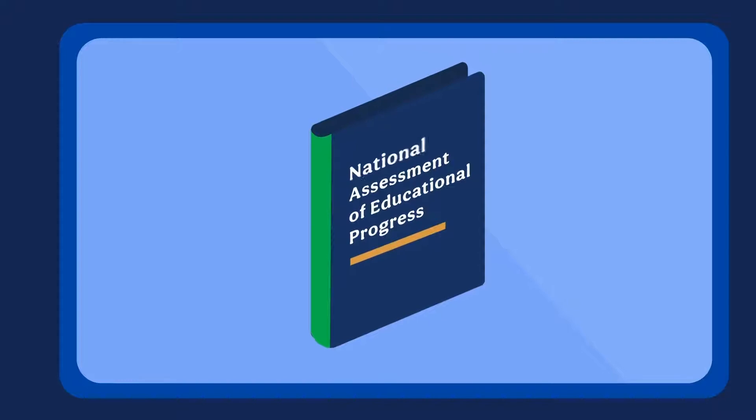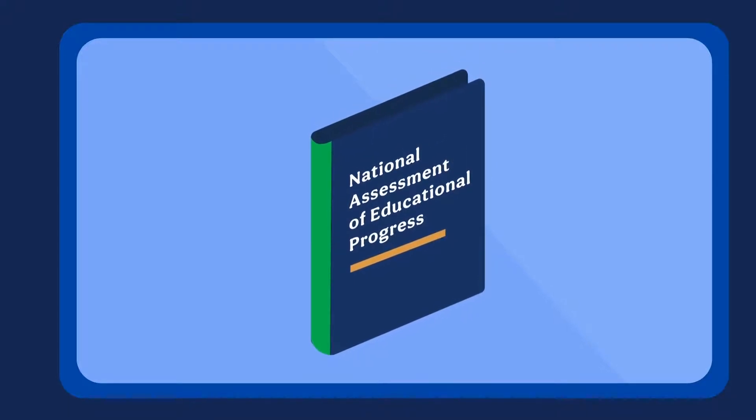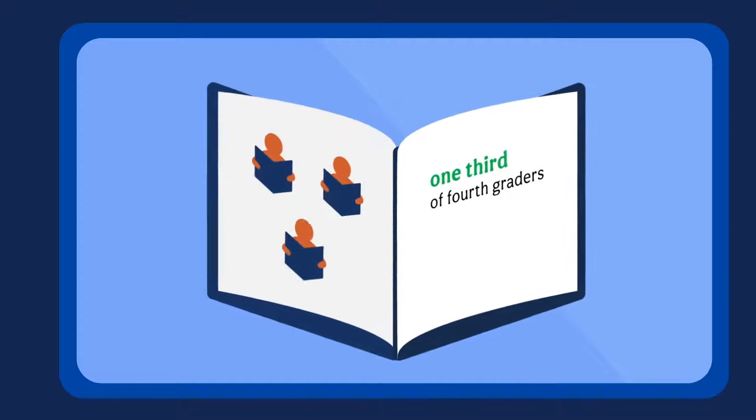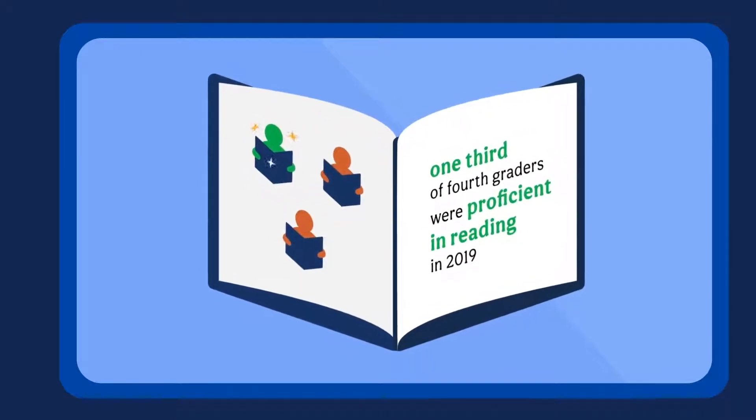Recent results from the National Assessment of Educational Progress show that only about one-third of fourth graders nationwide were proficient in reading in 2019.